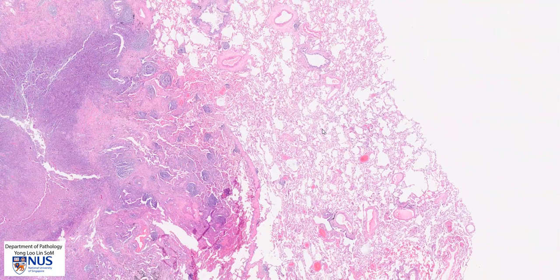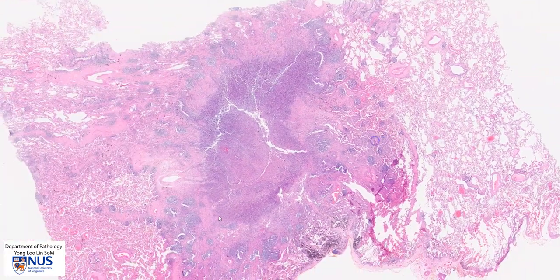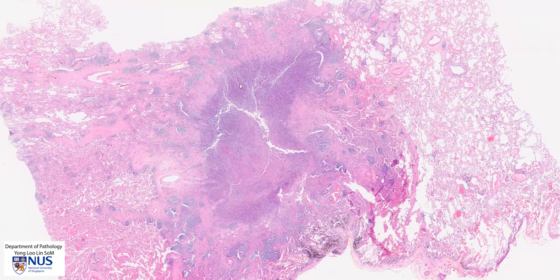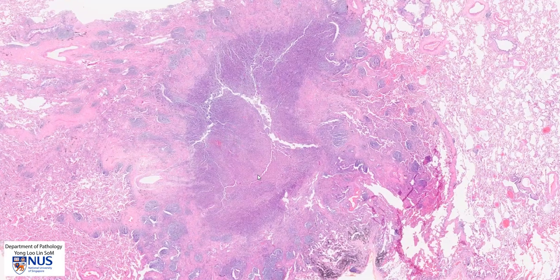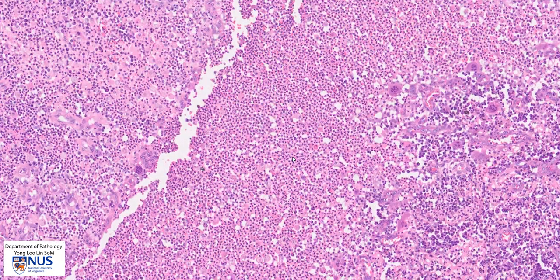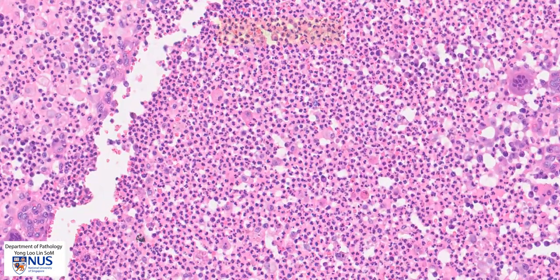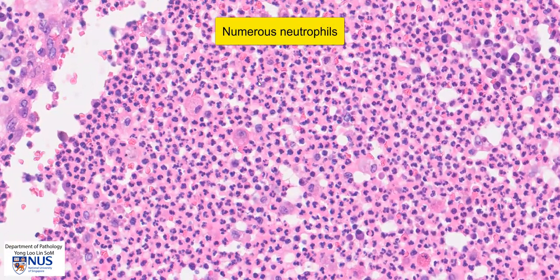Now let's move to the abnormal area. There are some lymphoid aggregates around, but the main area of abnormality is here. We can see that there is a pinkish area with a slightly more blue surrounding cuff. Zooming in on this pinkish area, we can see that there are numerous neutrophils, and we can recognize these by the multi-lobed nuclei.